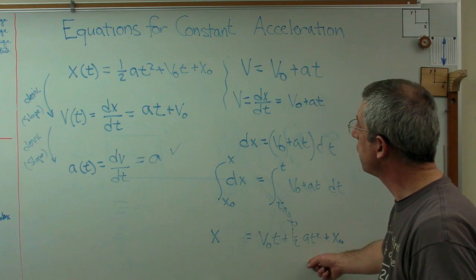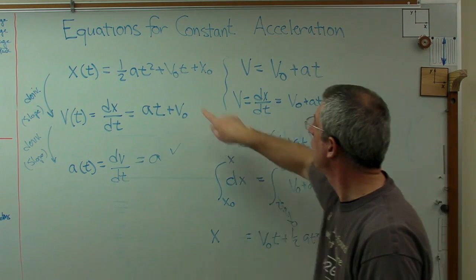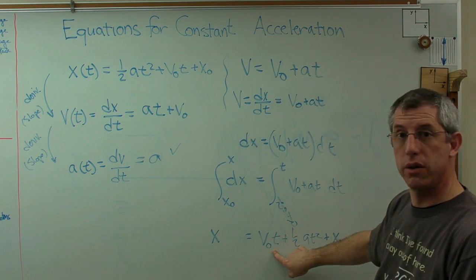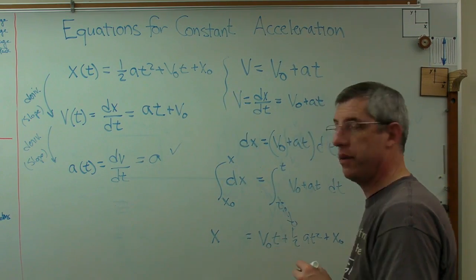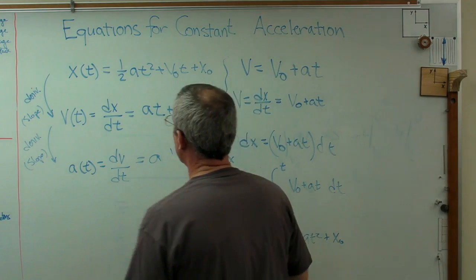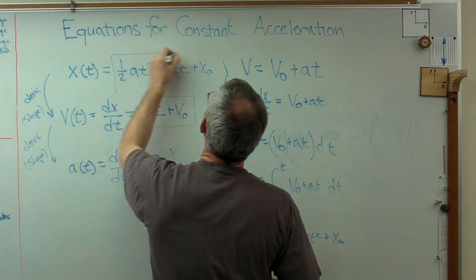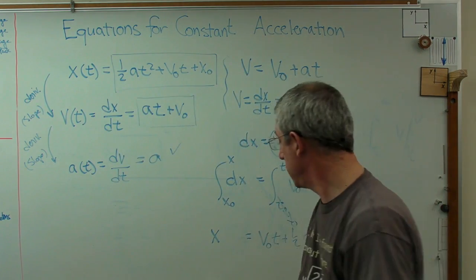And I can rewrite this if I like. It's going to look exactly like that. One half a t squared. There's that term right there. Plus v0 t. There's that term right there. Plus x0. There it is right there. So these are the expressions right here that you use for constant acceleration.